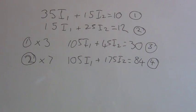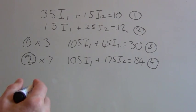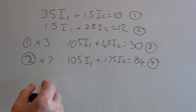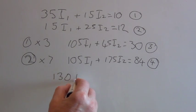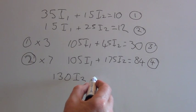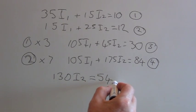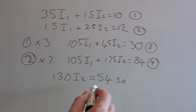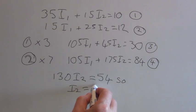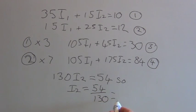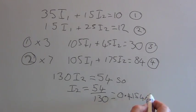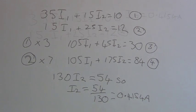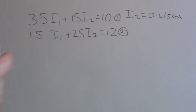So if we subtract equation 3 from equation 4, this will give us 130 I2 equals 54. So I2 equals 54 divided by 130, which equals 0.4154 amps. I've made a note of I2 in the top right hand corner.